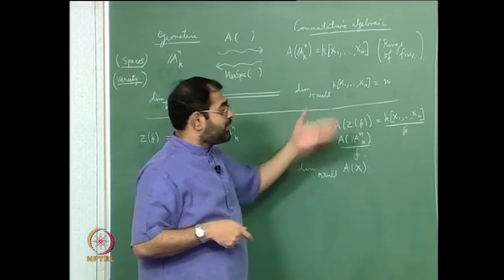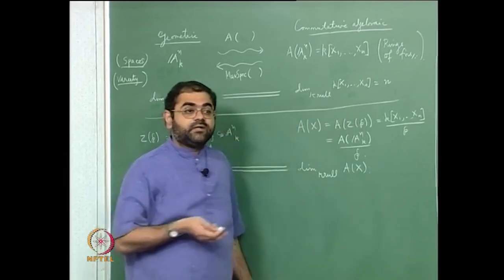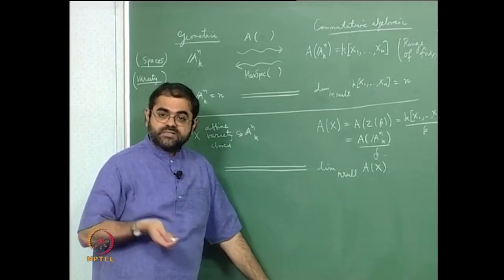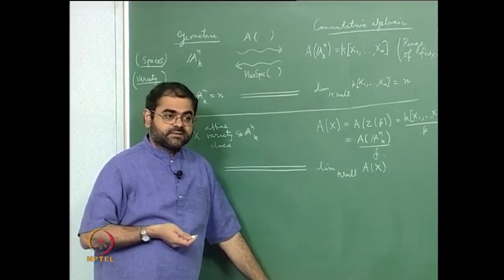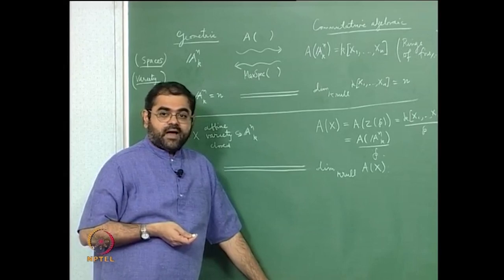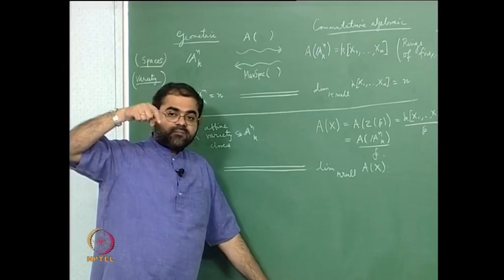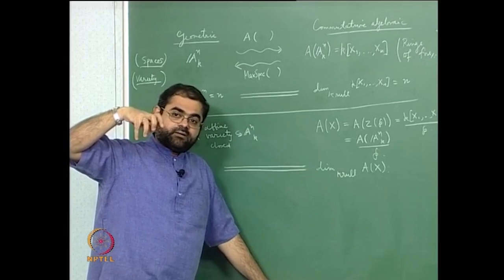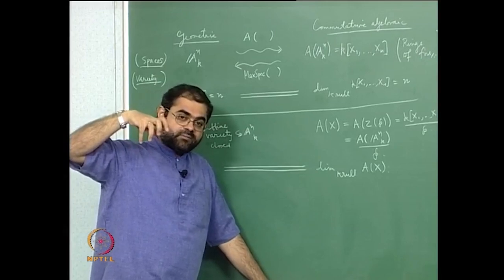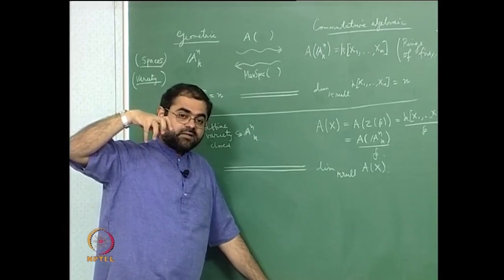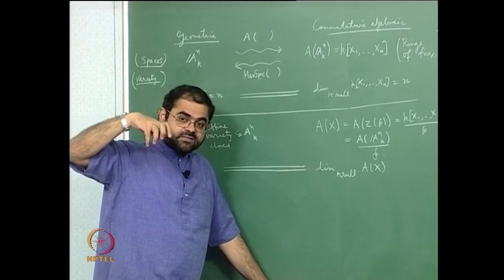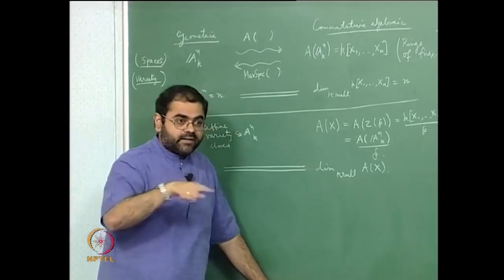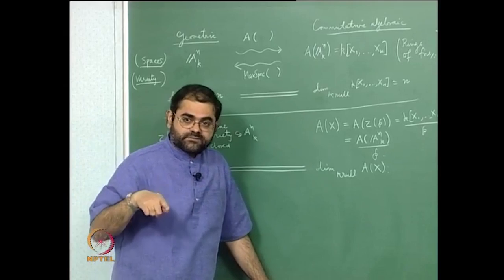The Krull dimension of a commutative ring is defined to be the supremum of the heights of the prime ideals. The height of a prime ideal is the maximum possible length of a strictly descending chain of primes starting from that prime ideal, minus one.